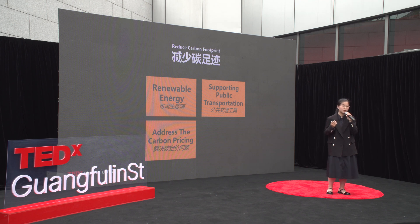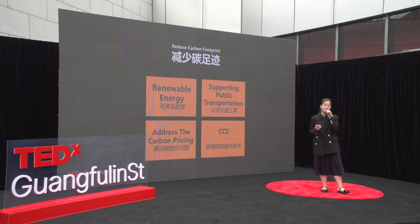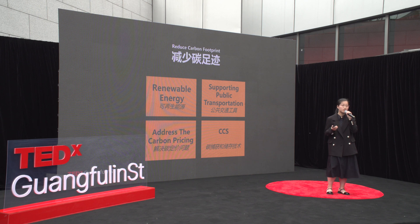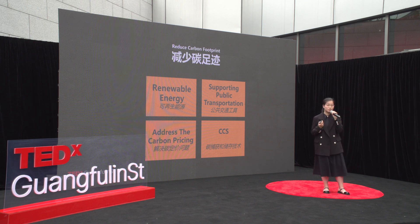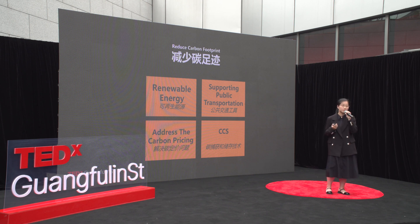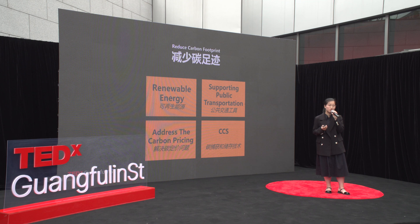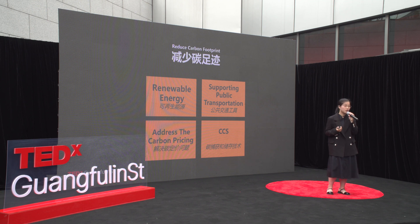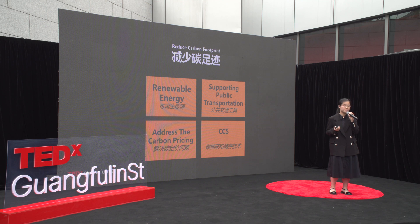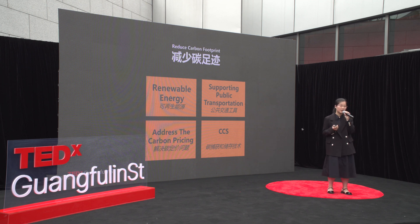Another important solution is to invest in carbon capture and storage — CCS technology. CCS technology involves capturing carbon dioxide emissions from power plants and other industrial sources and storing them underground. This technology has the potential to significantly reduce greenhouse gas emissions. Several countries, including the United States and Canada, have already invested in CCS research and development. In conclusion, global warming is a complex problem that requires a multifaceted solution. We need to work together to reduce our carbon footprint, transition to renewable energy, reduce food waste, and support public transportation. We must also implement carbon pricing and invest in CCS technology.